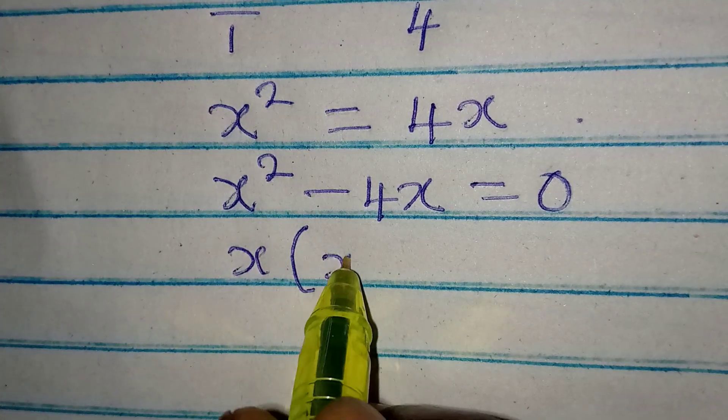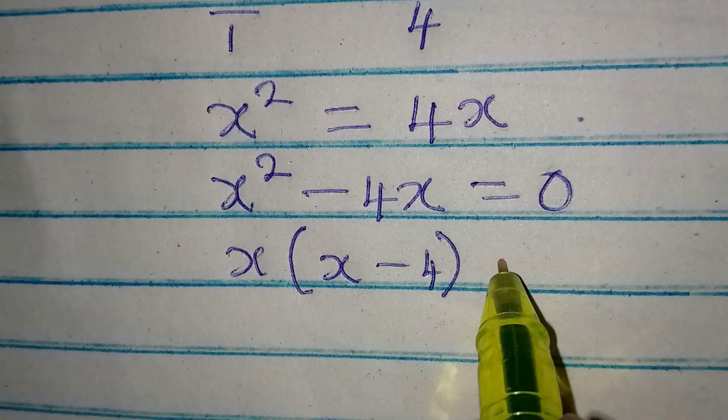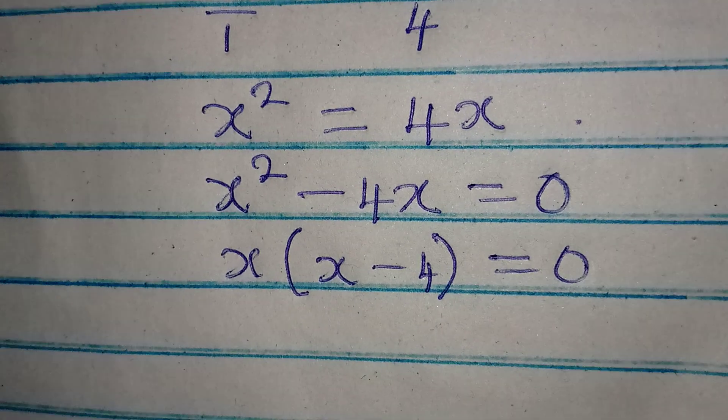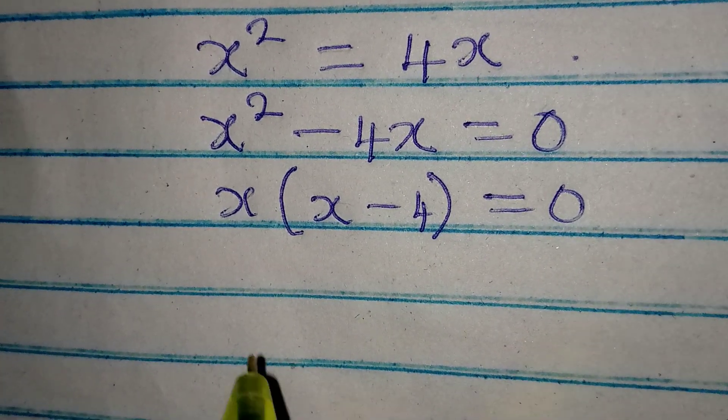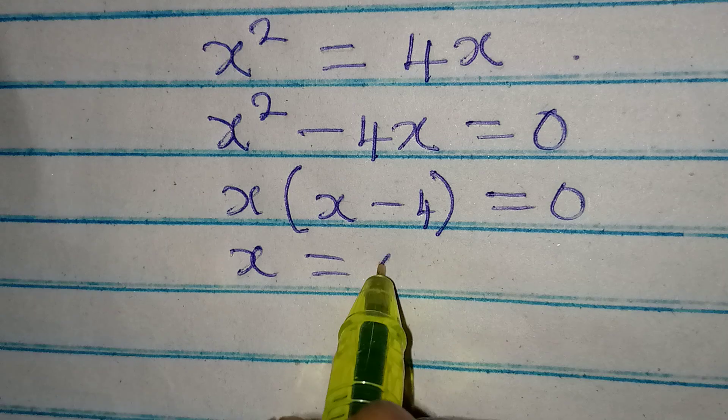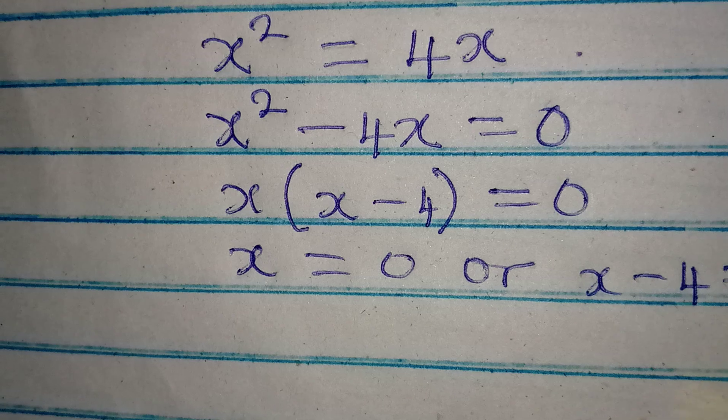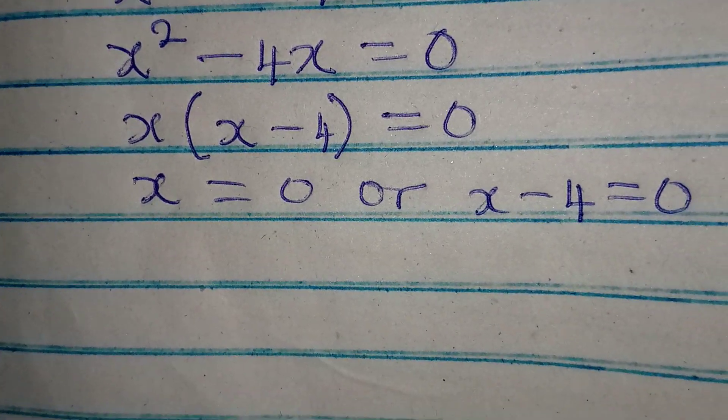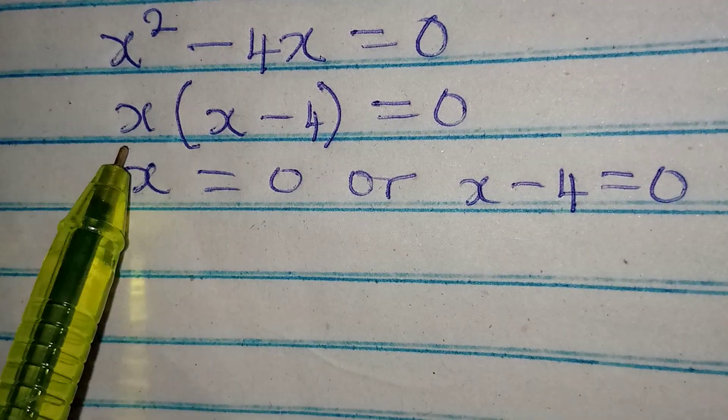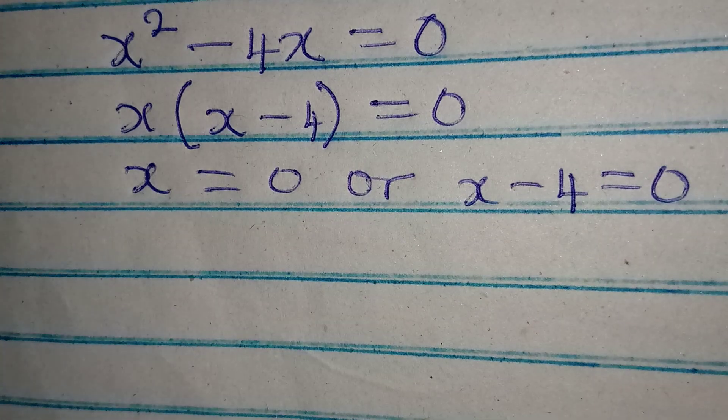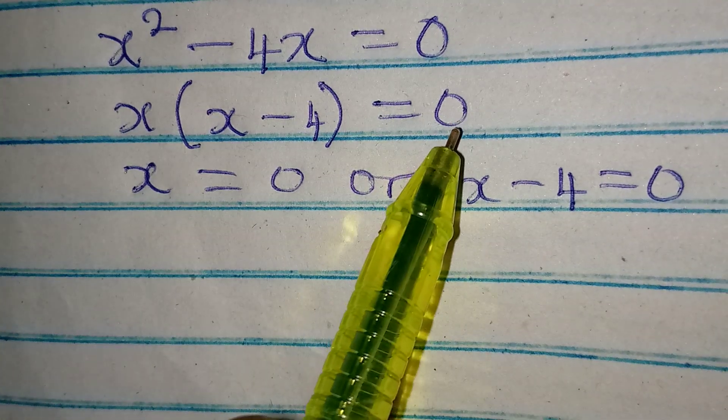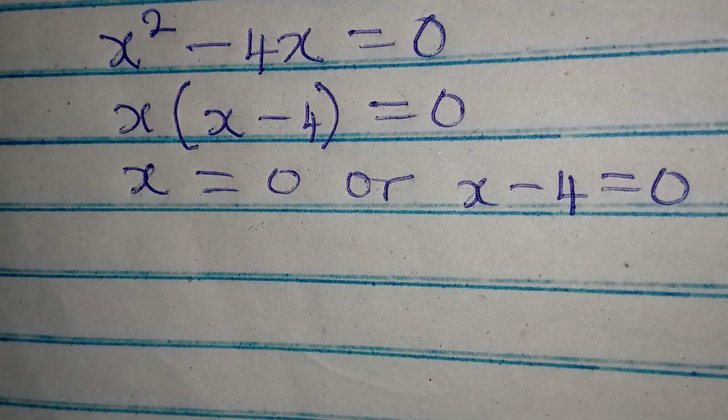From here we factorize because x is common, then we have x times (x minus 4), and this equals 0. If we go ahead, x is either equal to 0, or x minus 4 is equal to 0. So you apply this when you have two terms or two numbers multiplied to get 0, so it is either one of the numbers or one of the terms is equal to 0.